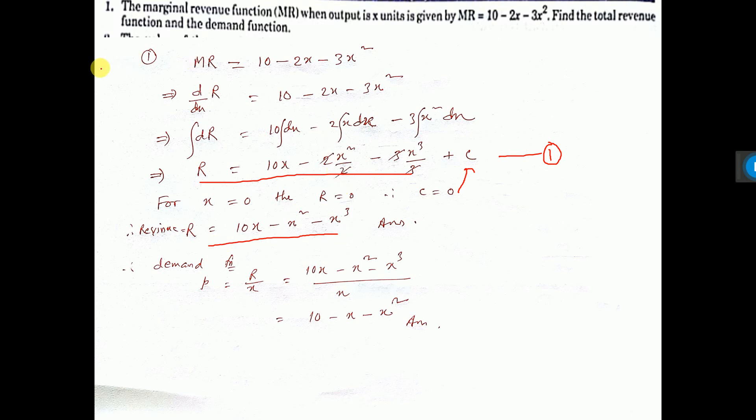Now, if you find demand function, so demand function is p, small p. What is the formula? Revenue by x. Revenue already you have got, put it there by x. So 10x by x is 10, x square by x is x, x cube by x is x square, and that is the demand function, that's all.